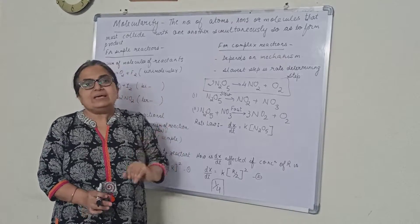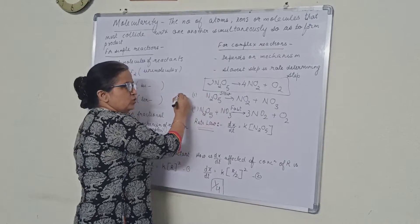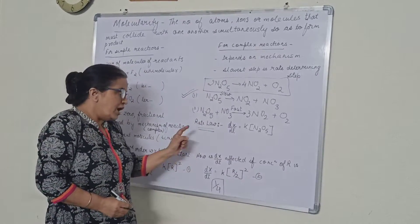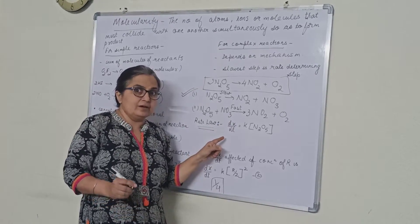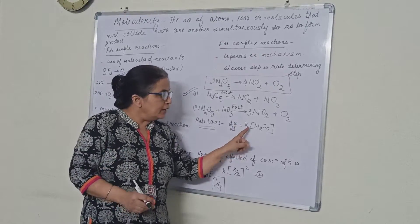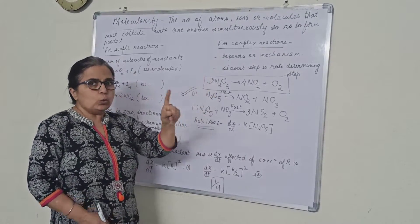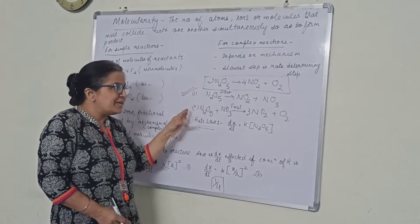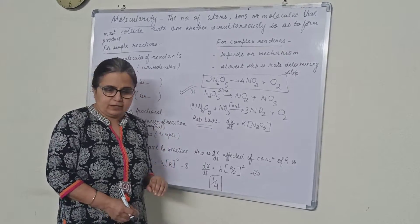Rate determining step means the rate law will be written taking into consideration only the slowest step. So I will write the rate law as dx by dt, rate of reaction is equal to K, rate constant into concentration of N2O5. Though it was 2, we will write it as 1. Because as per the mechanism, we got it as 1.